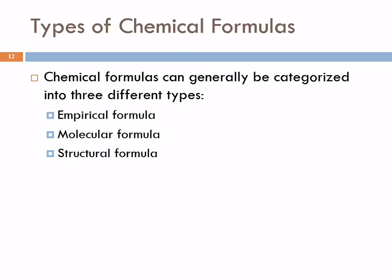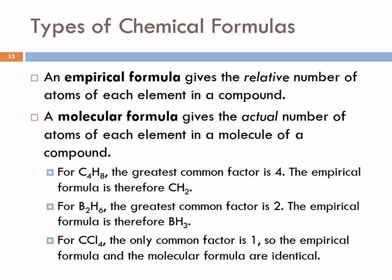There are different types of chemical formulas. An empirical formula gives us the relative number of atoms—it's the lowest ratio. Empirical is a word that means from experiment; this is determined experimentally. A molecular formula tells us the actual number of atoms in a molecule.